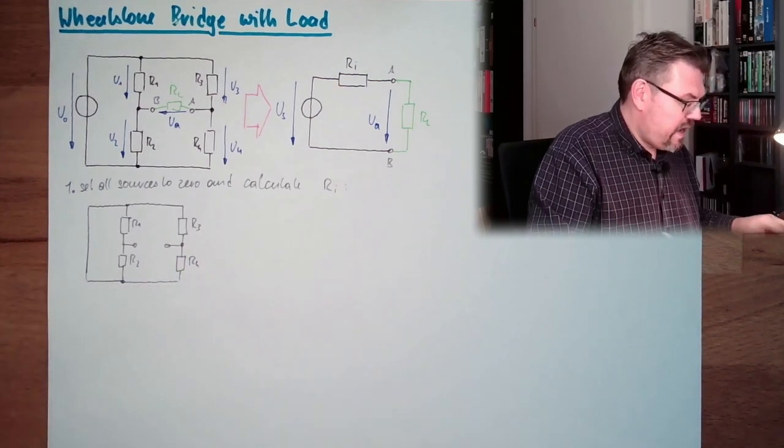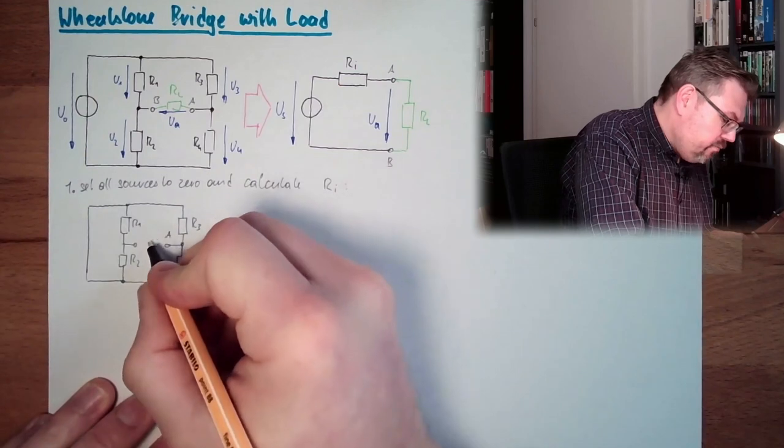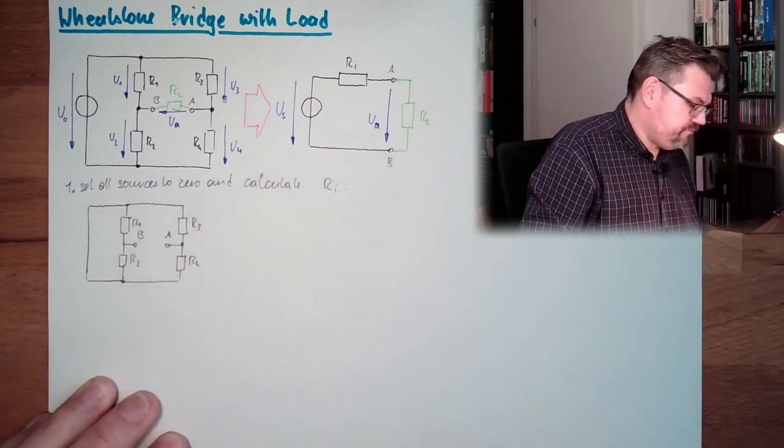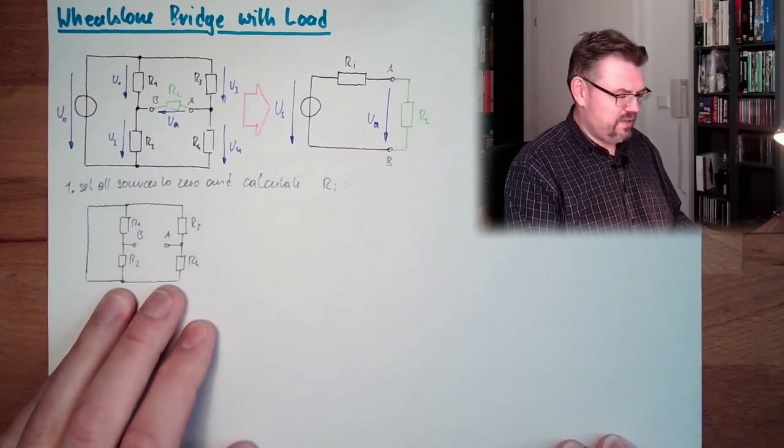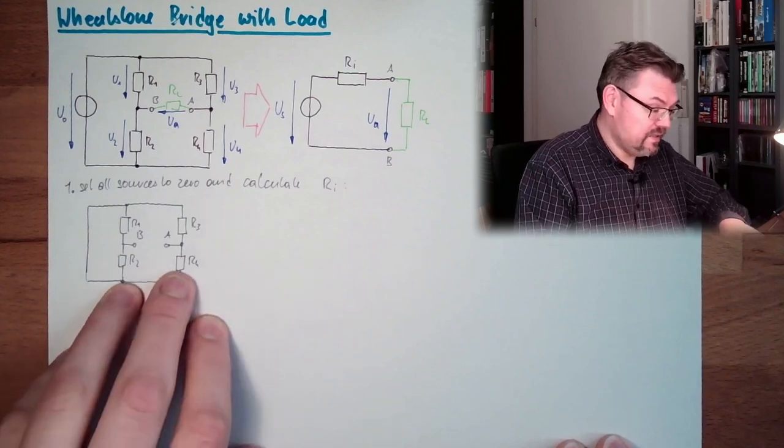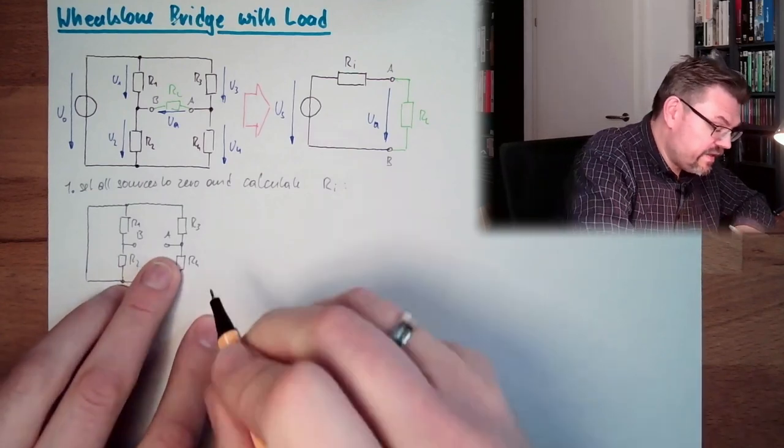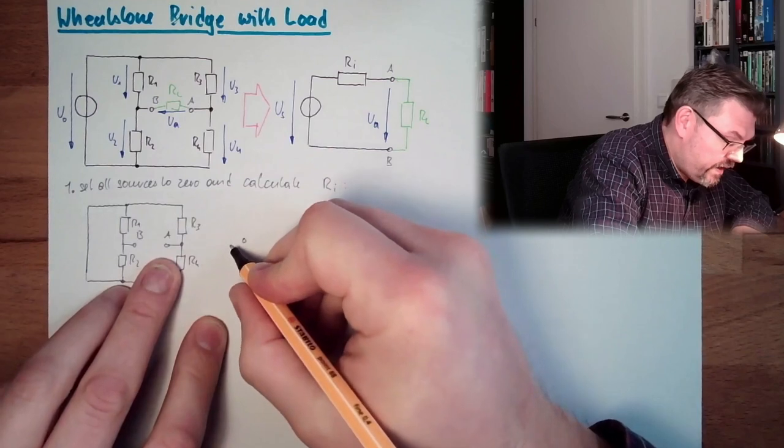That's it. And we want to calculate from A to B the resistance. This does look a little bit complicated. It does indeed. So let's start here at A.